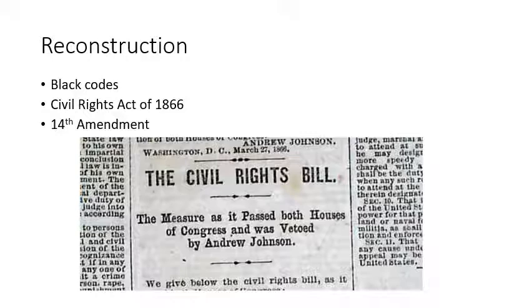Johnson vetoed that legislation. At that point, the radical Republicans became much more organized, and Congress passed the Civil Rights Act of 1866, which specified the civil rights to which all United States citizens were entitled — including Freedmen and former slaves. Johnson vetoed the Civil Rights Act of 1866 as well, but it still became law because Congress mustered the two-thirds majority needed to override his veto.